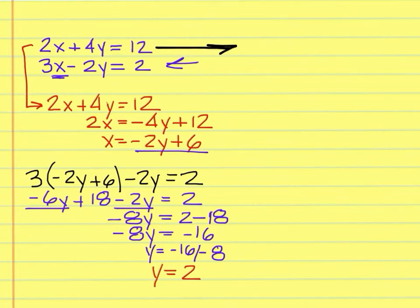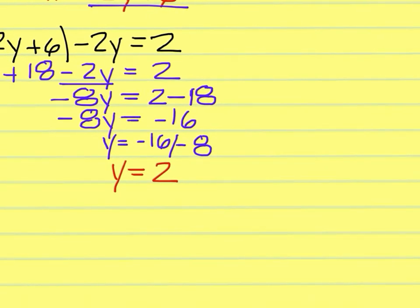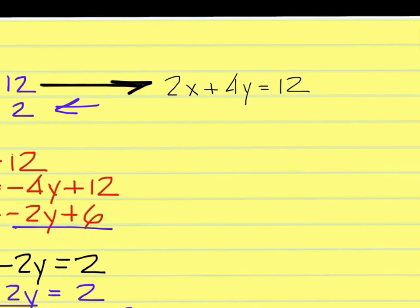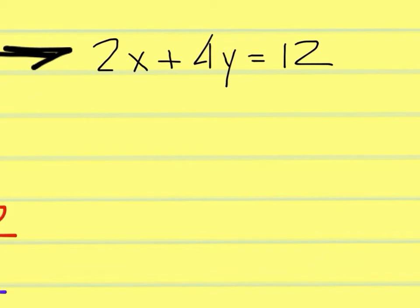2x plus 4y equals 12. And insert 2, which is what I found down here at the bottom, for y. So I'll come up here and plug that in for y and have 2x plus 4 times 2 equals 12.